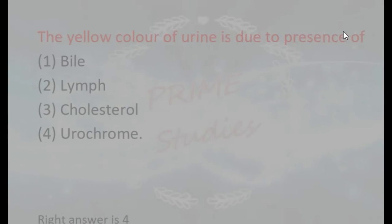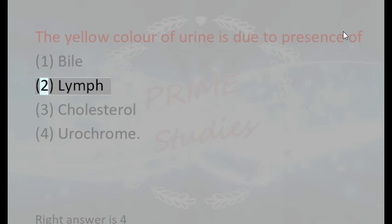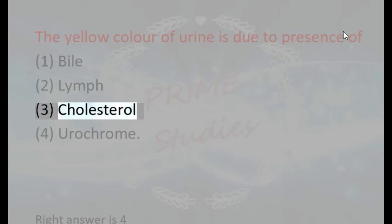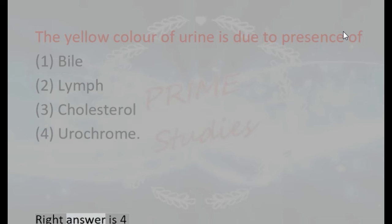The yellow color of urine is due to the presence of: 1. Bile, 2. Lymph, 3. Cholesterol, 4. Urochrome. Right answer is 4.